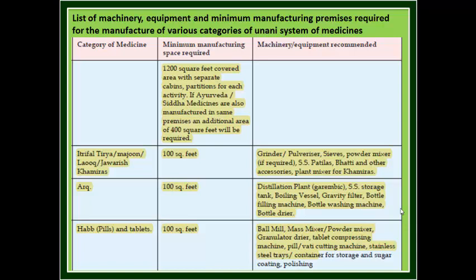Now we will see the medicine category, minimum space required, and recommended equipment in three separate columns. Category 1: Taryaq, Marjun, Lauq, Jawarish, Kamiras. Minimum required area: 100 square feet. Recommended machines: grinder, pulverizer, sieves, powder mixer, stainless steel vessels, and planet mixer for Kamiras, etc.